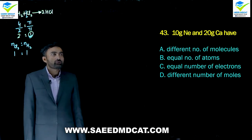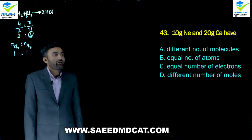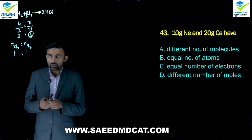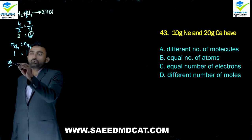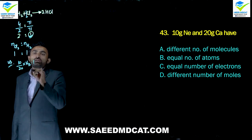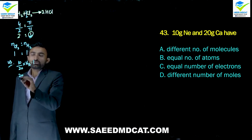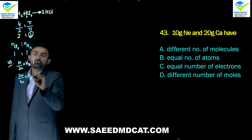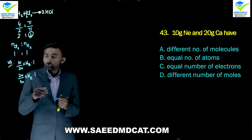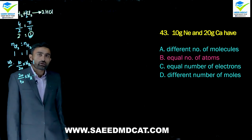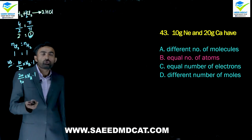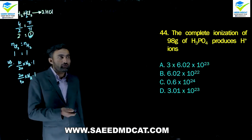Question 43: 10 g neon and 20 g calcium. Neon moles = 10/20 = 0.5 mol; calcium moles = 20/40 = 0.5 mol. Both have equal atoms (0.5 × NA each), so beta option (equal atoms) is correct. Protons and electrons differ: neon has 10 protons, calcium has 20.